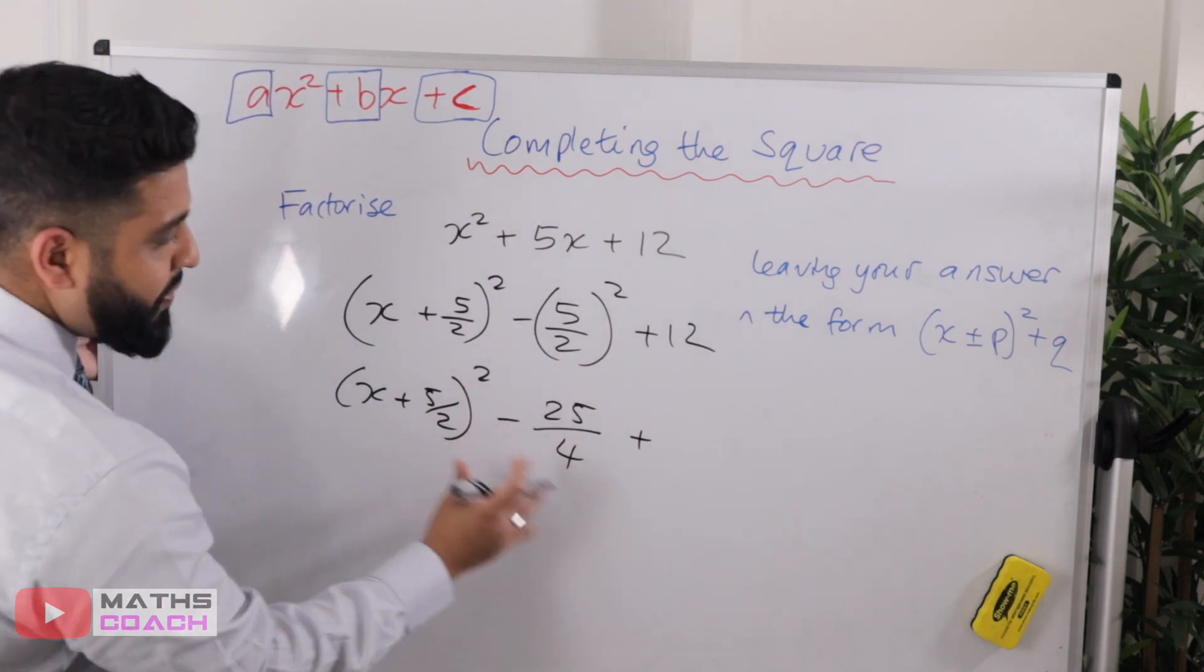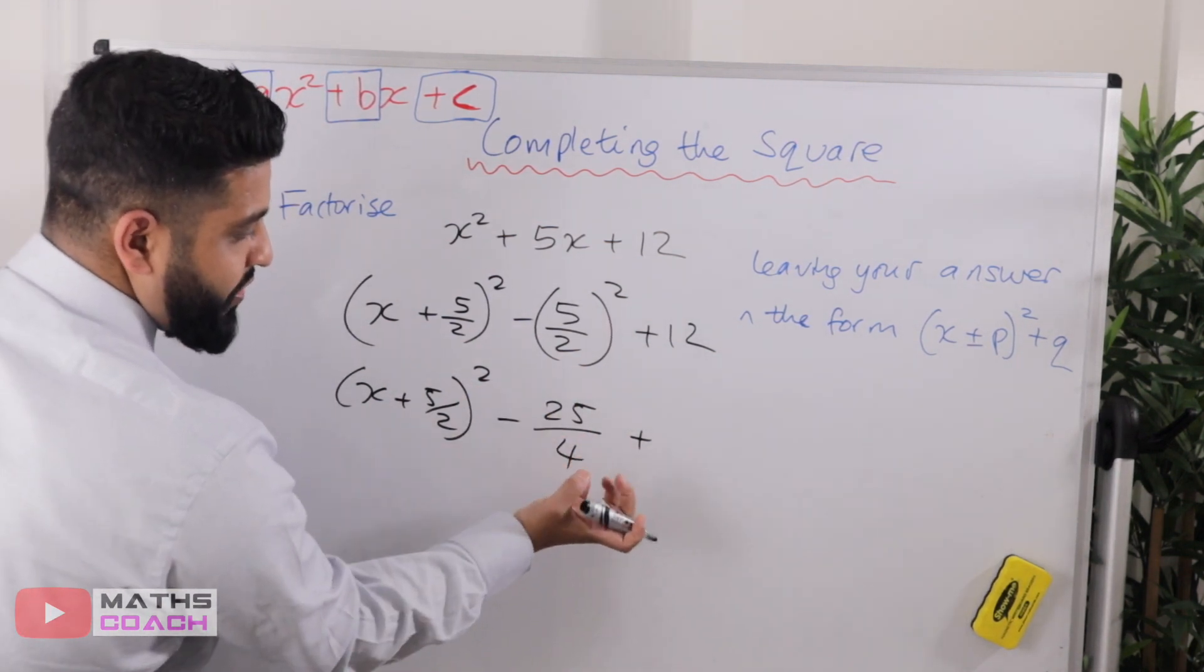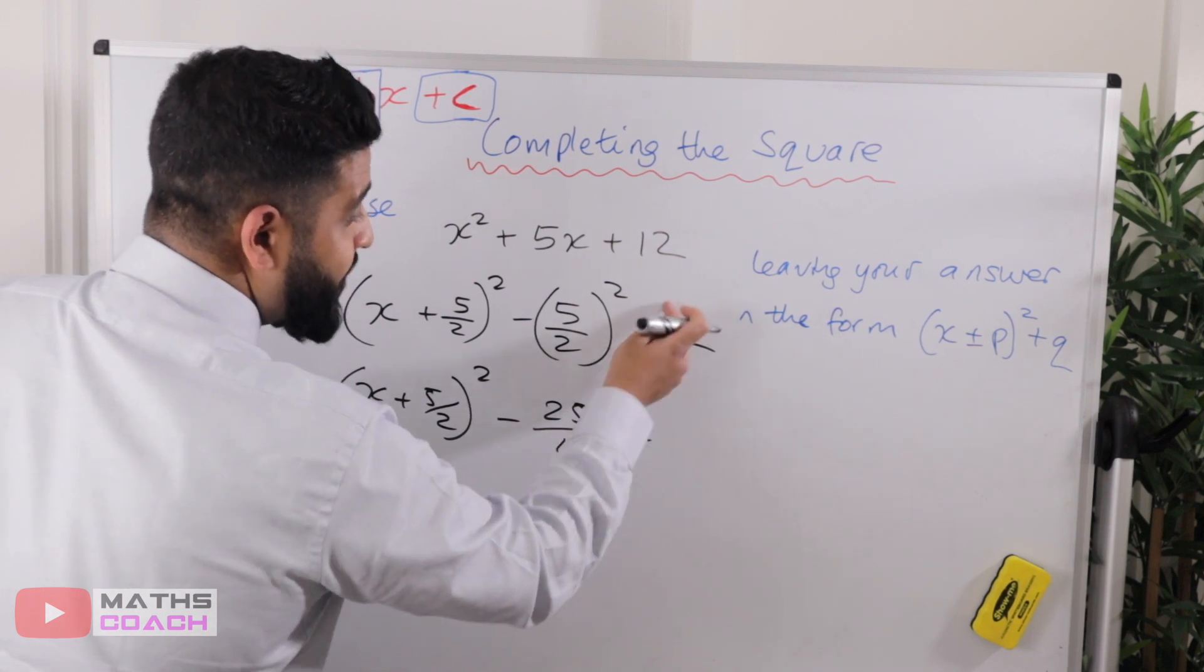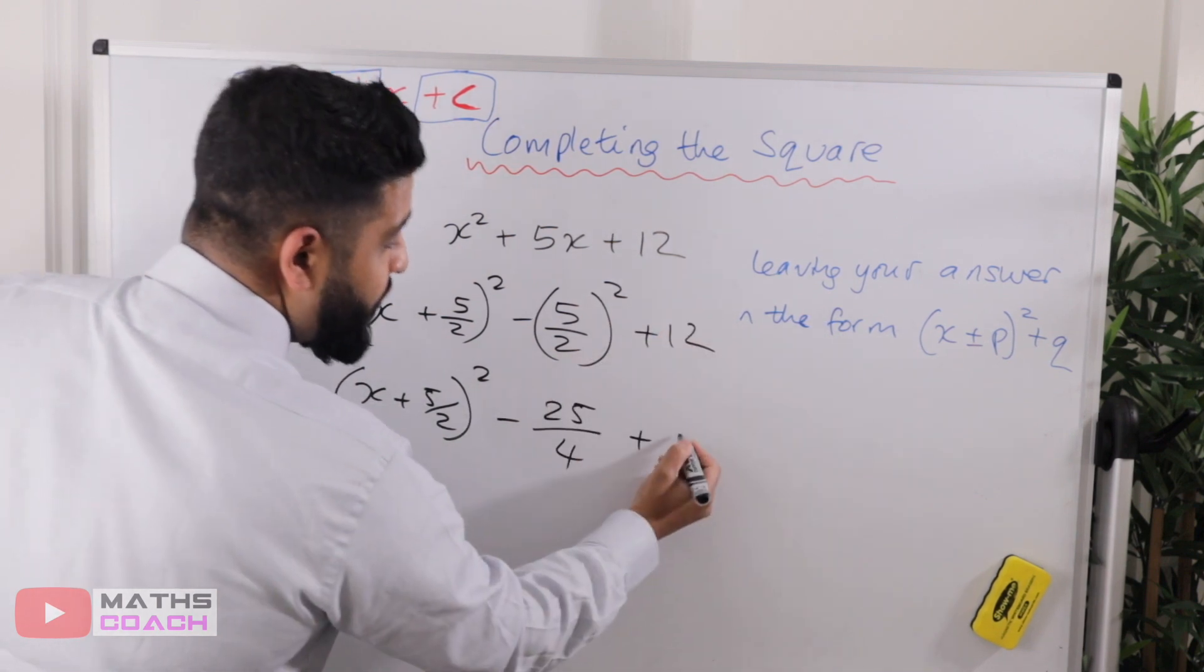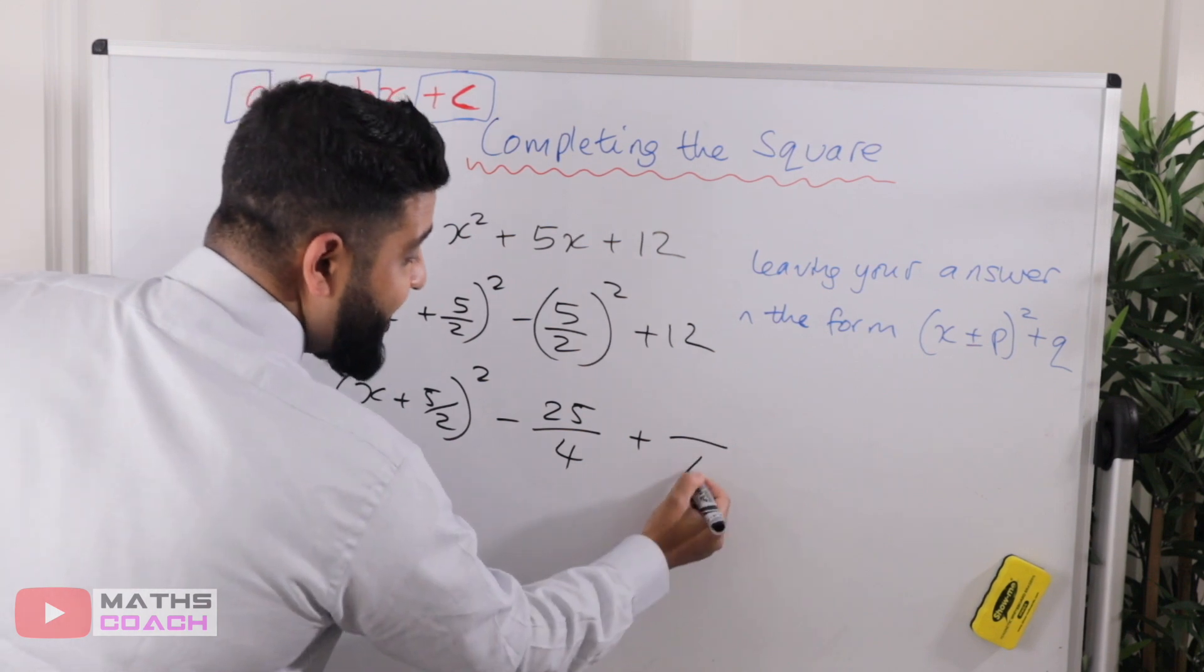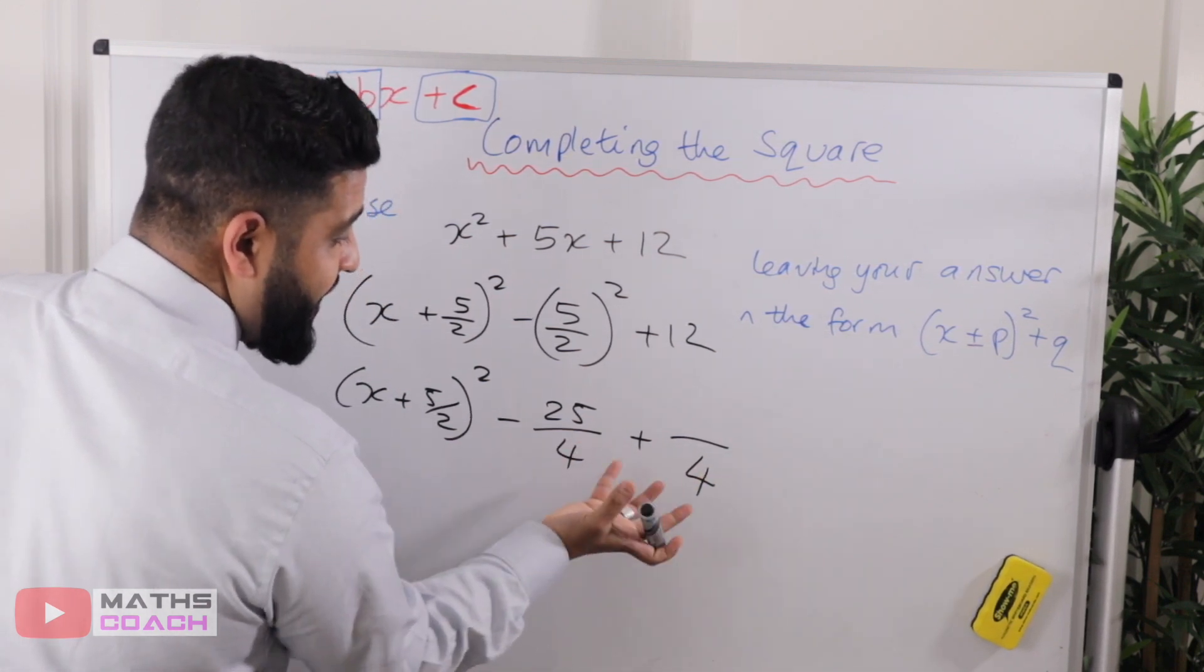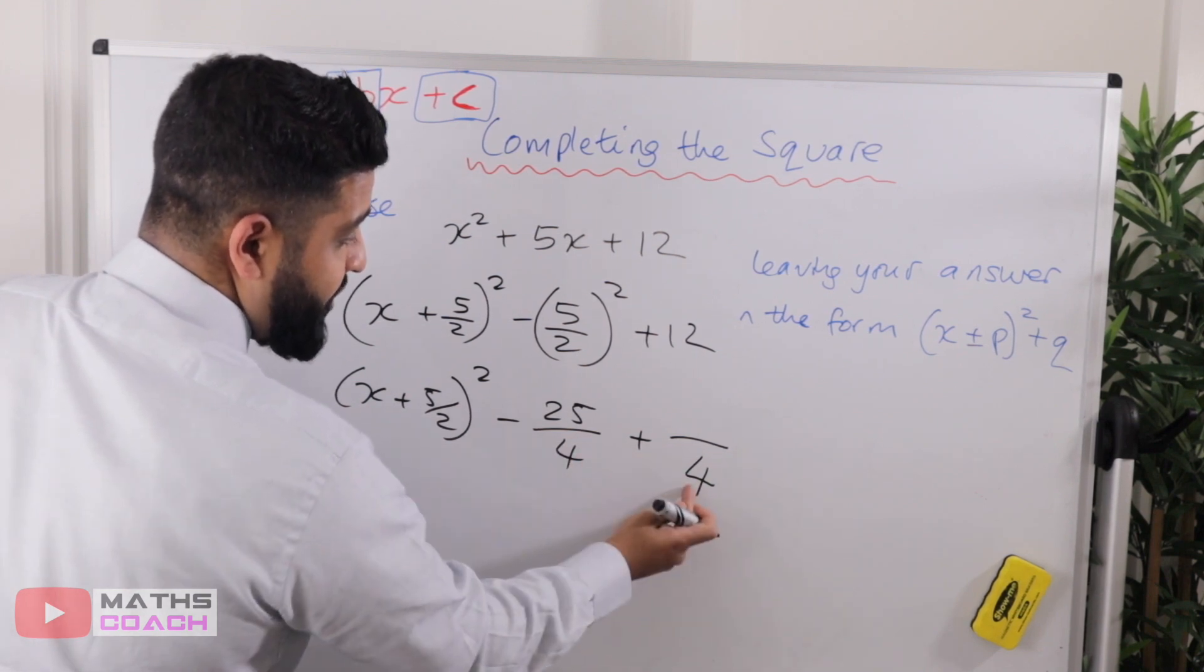And then we've got the plus twelve. Now, we are going to be dealing with fractions, we're going to add those fractions together. So it's probably a good time now just to change that twelve into a fraction with a denominator of four because we can only add and collect fractions where we have the same denominators.